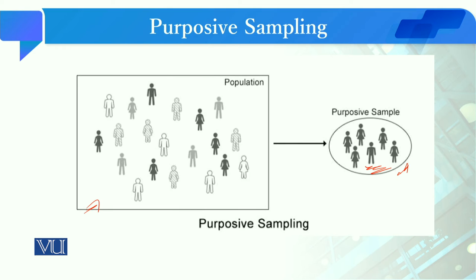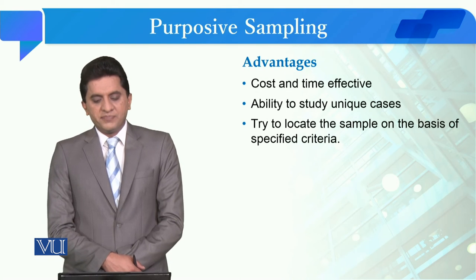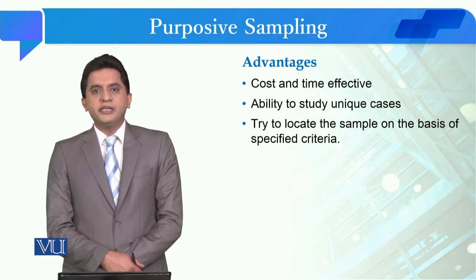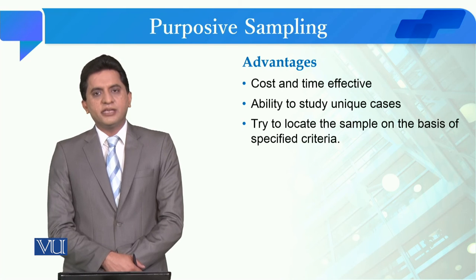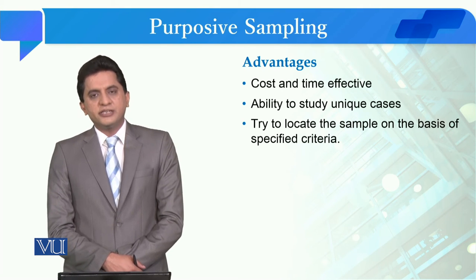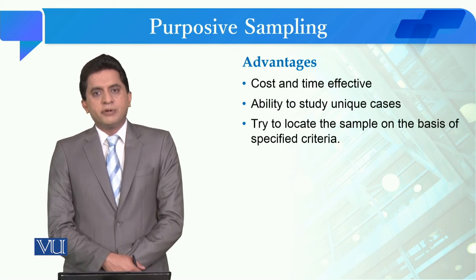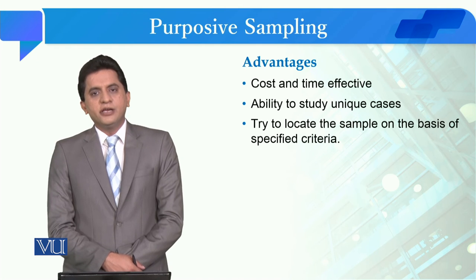What are the advantages of purposive sampling? Purposive sampling is a cost and time effective strategy. When we use probability sampling such as systematic random sampling or simple random sampling, it consumes more time and energy compared to purposive sampling. Through this sampling technique, you also have the ability to address unique cases.